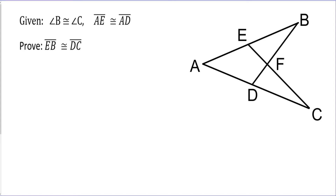Here's another problem dealing with overlapping triangles and some CPCTC. Taking a look at this one, let's do some marking of the given information. In this case, angle B is this one up top. This is congruent to angle C, which is right here. And then AE, which is this little piece here, is congruent to AD, which is this little piece here.